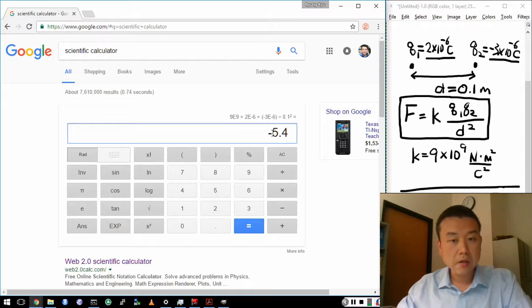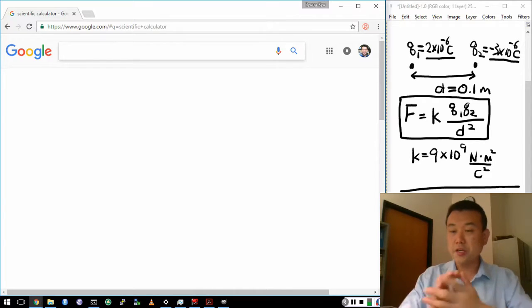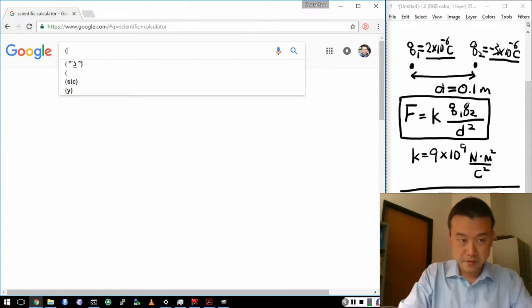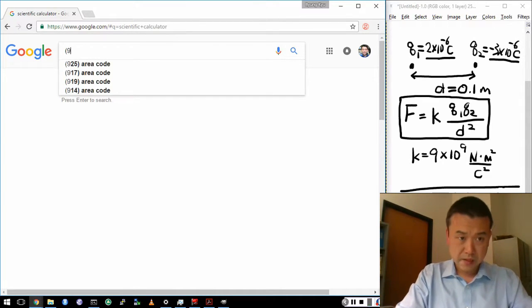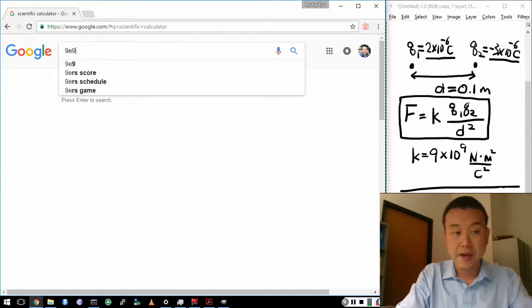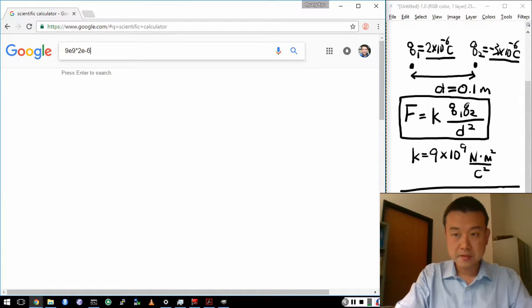Now you can also enter these in Google search. And it'll actually do the calculation. So let me just type it in. 9E9 times... E stands for the exponent thing. 9 times 10 to the power of 9. Times 2E minus 6. Times minus 3E minus 6. Divided by 0.1 squared.